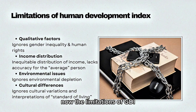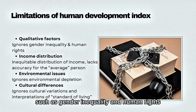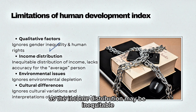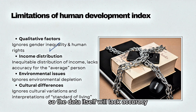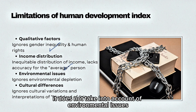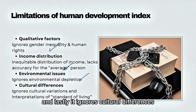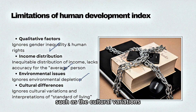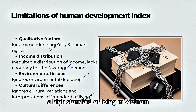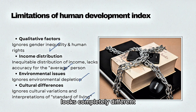The limitations of HDI is that it does not factor in some qualitative factors, such as gender inequality and human rights. As with the prior example, the income distribution may be inequitable, so the data itself will lack accuracy for the average person. It does not take into account environmental issues, such as environmental depletion. And lastly, it ignores cultural differences, such as cultural variations and interpretations of the standard of living. For example, a high standard of living in Vietnam versus a high standard of living in Switzerland looks completely different.